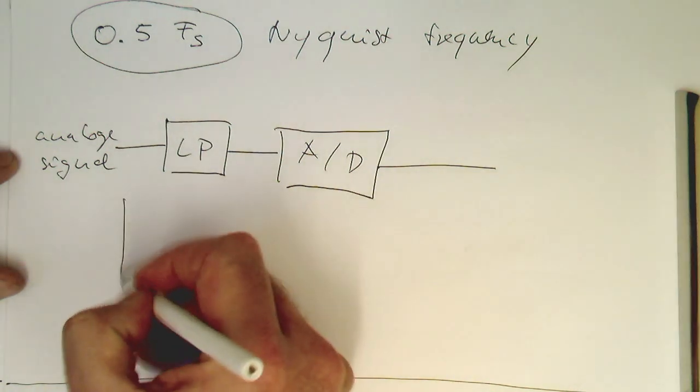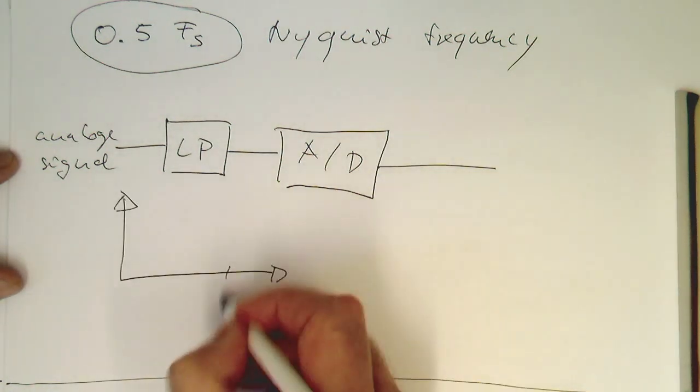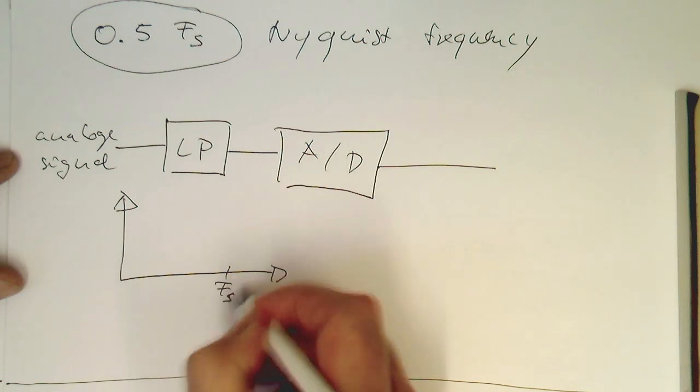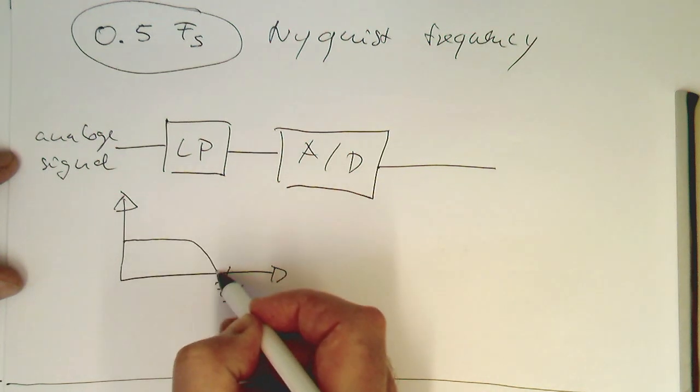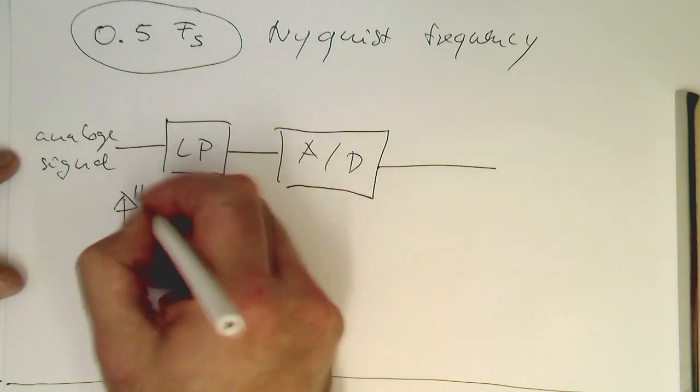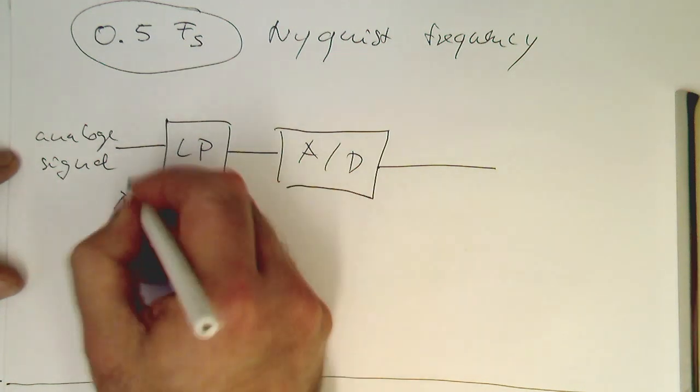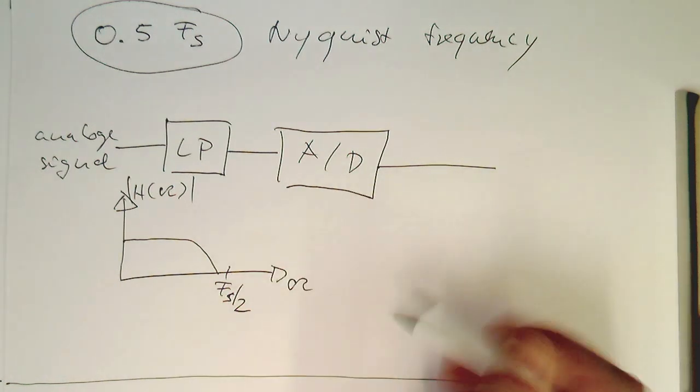And so obviously the frequency response of our low pass filter, if this is fs half here, needs to be like this, that the frequency response of our low pass filter goes down before it hits fs half. So that's our h of omega here, our response, and that's omega. So that's one way of doing this.